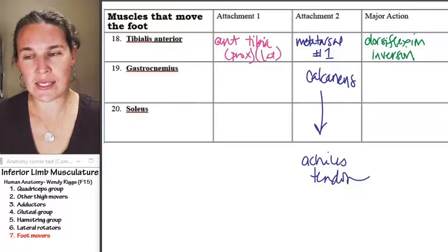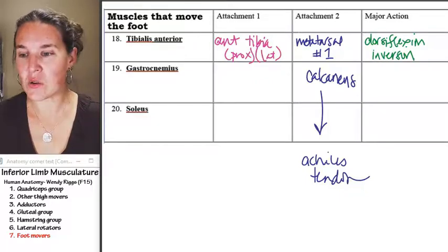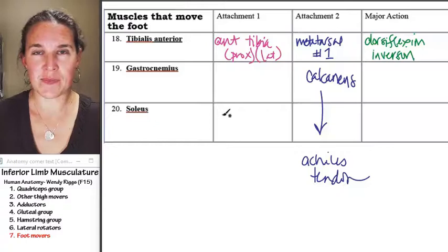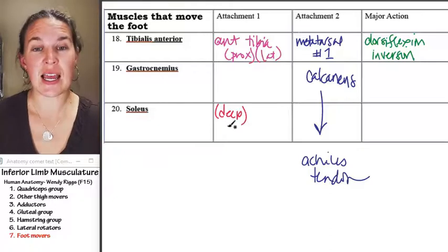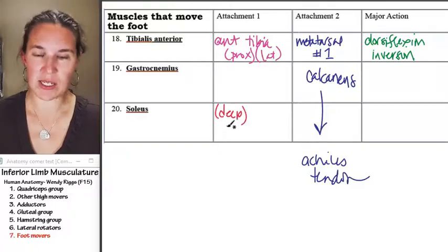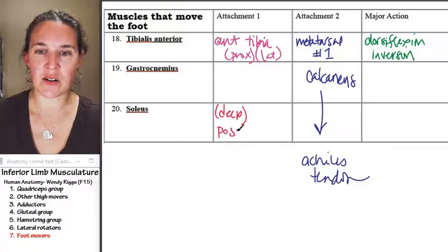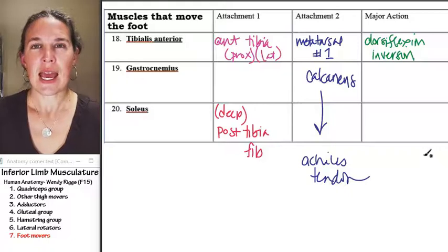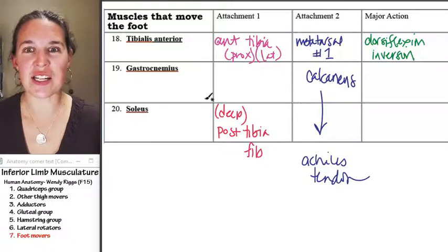So soleus is deep, and soleus's proximal attachment... Let's make a note that it's a deep muscle. It's deep to gastrocnemius, and its proximal attachment is posterior tibia and a little bit of fibula. It's deep to gastrocnemius.